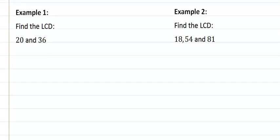On example 1, if we're trying to find the LCD of 20 and 36, we're going to take and do the prime factorization of 20. Well, 20 is divisible by 2, that leaves us with 10.